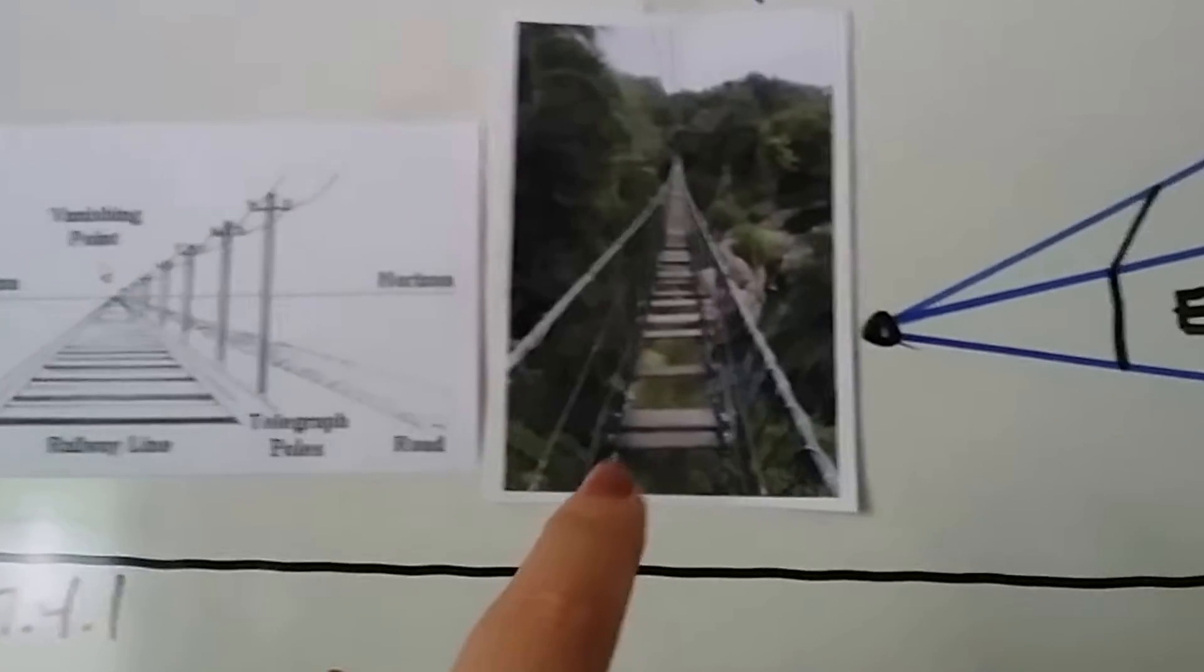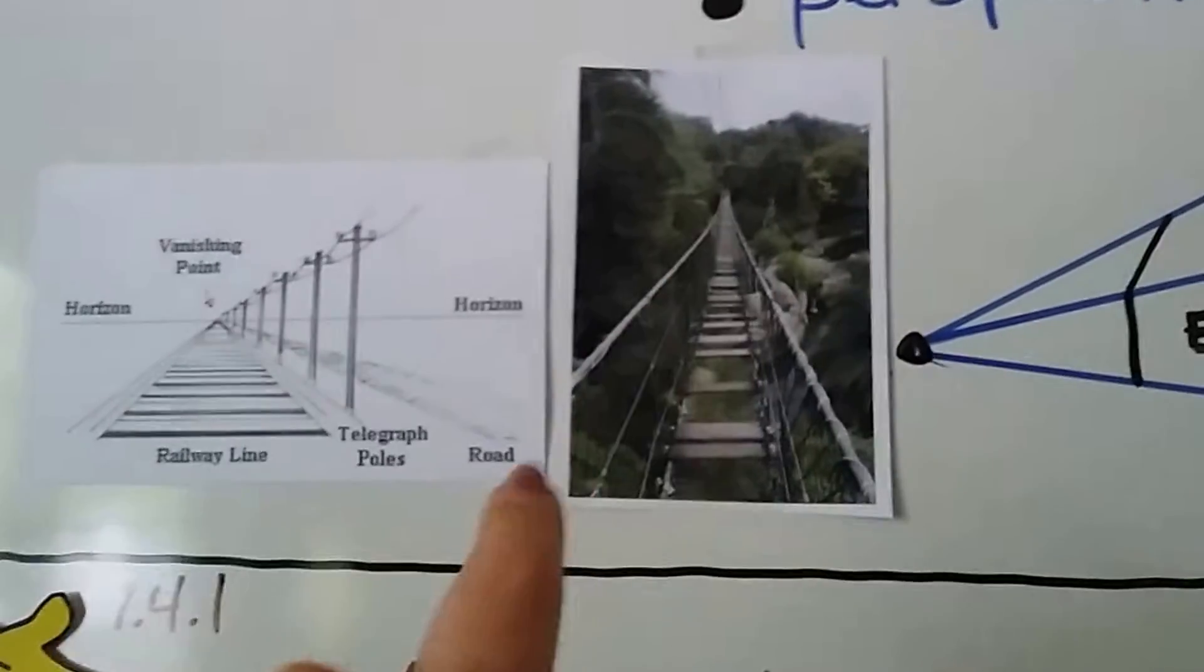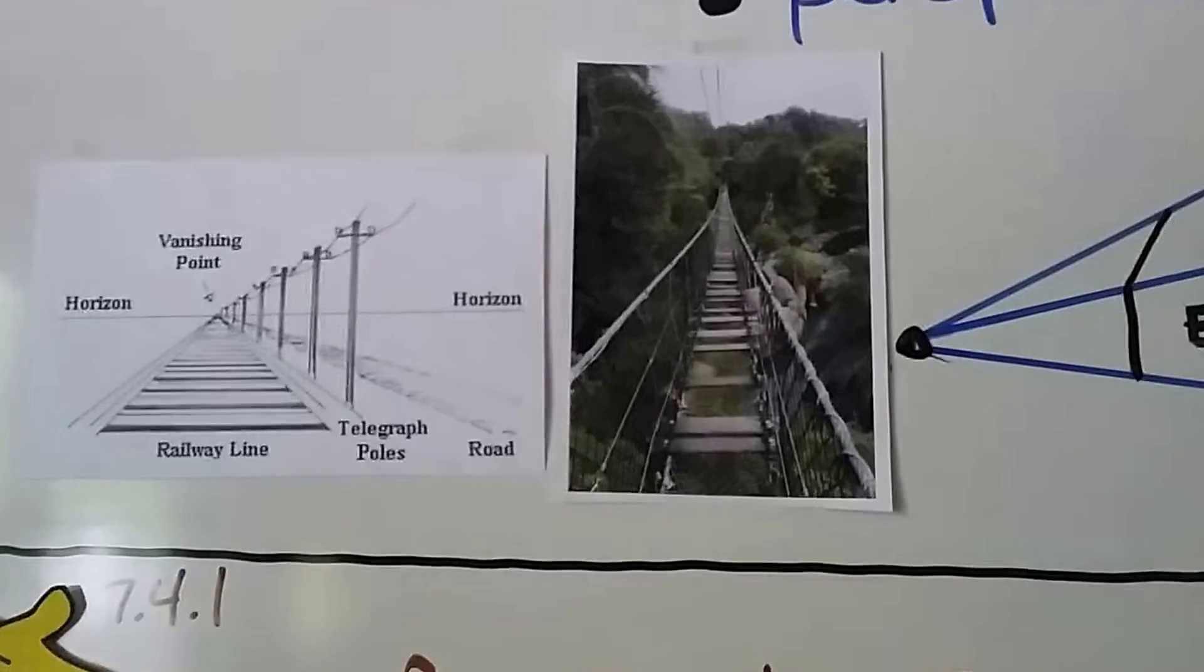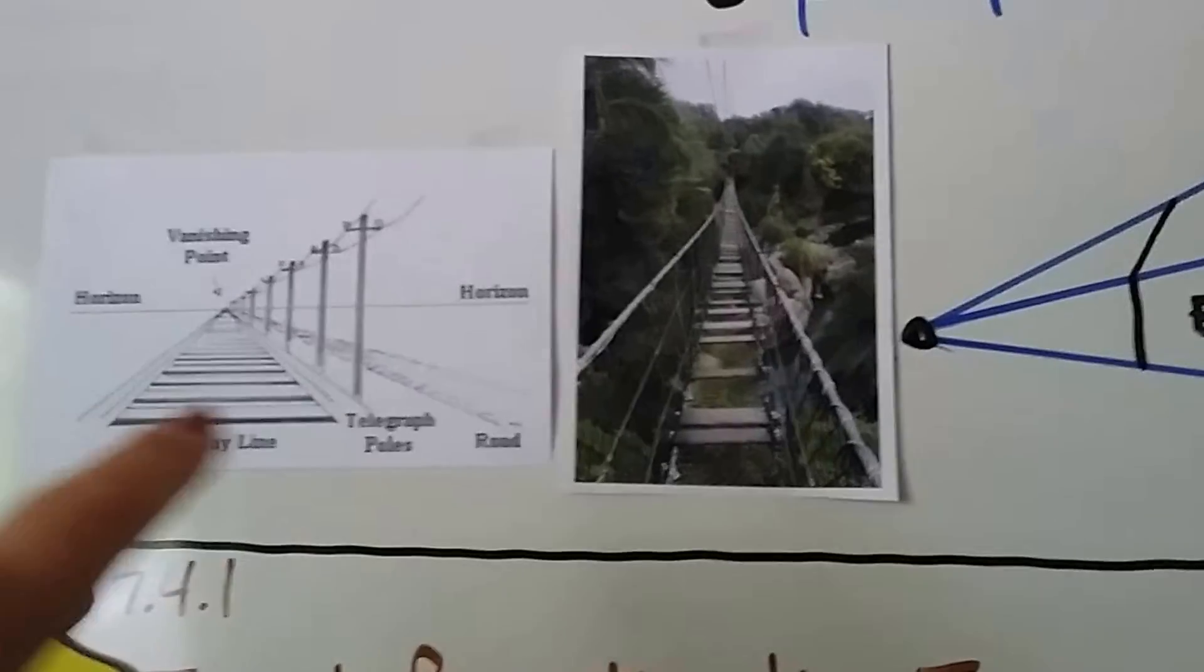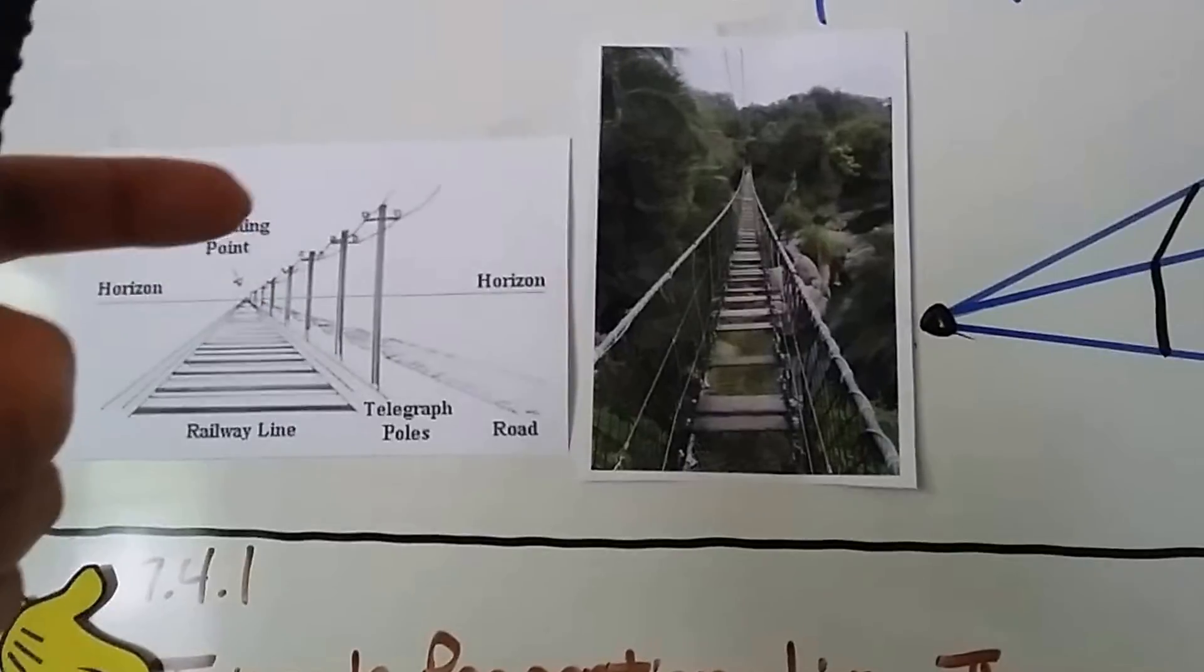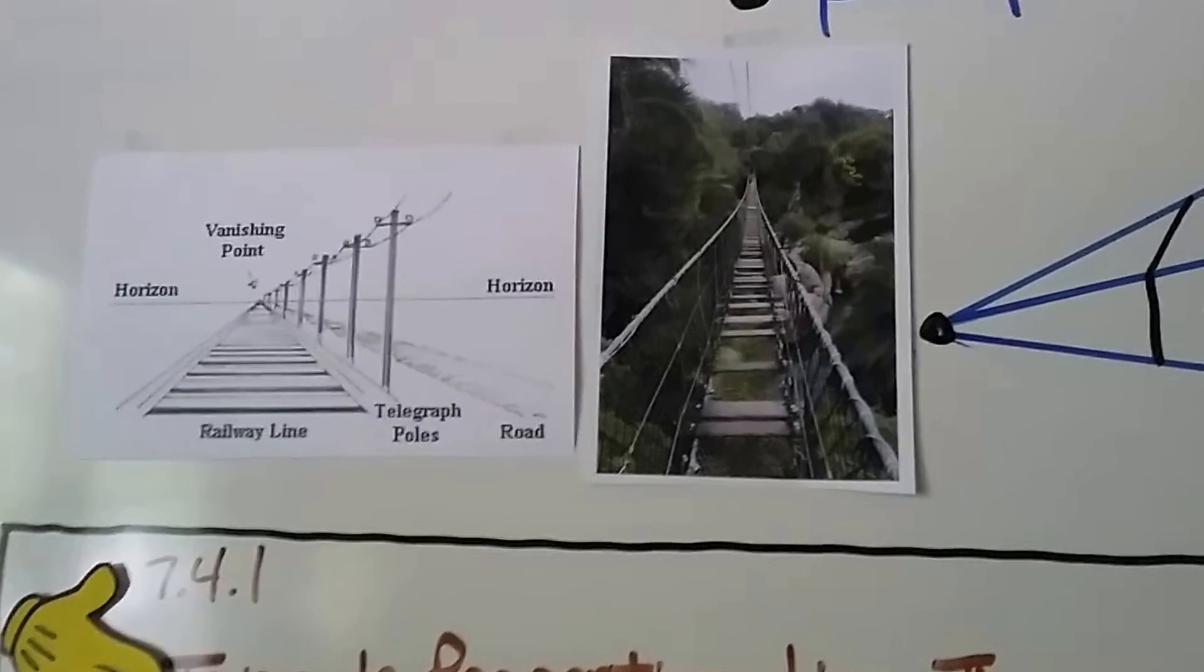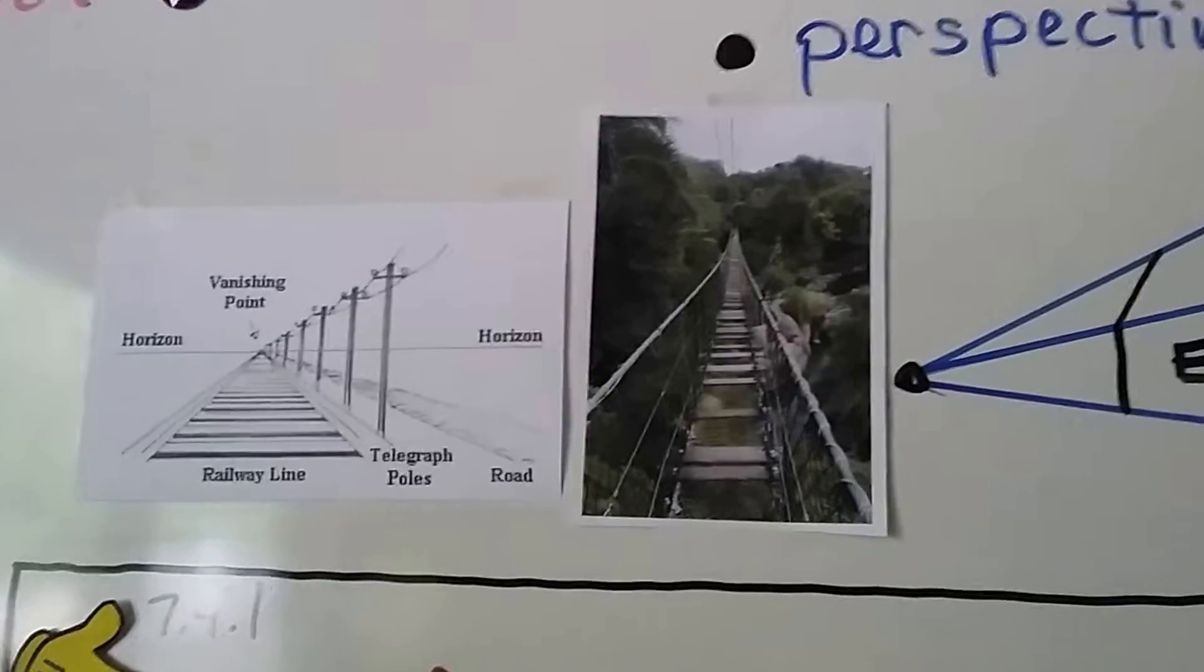And look at this rope bridge. This rope bridge is getting smaller as it gets farther away. And we can kind of see a triangle here, can't we? Well, these railway ties that are supporting the tracks are parallel to each other. And that's going to be important about what we're going to talk about in this video.